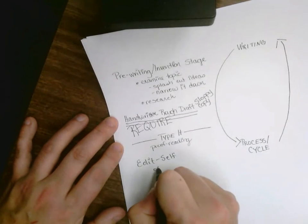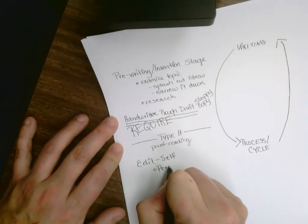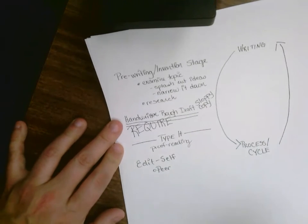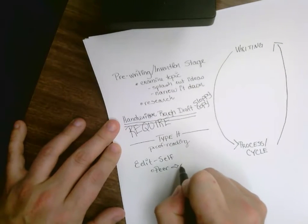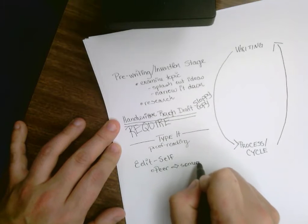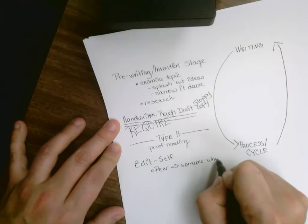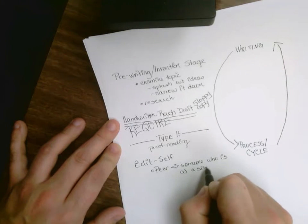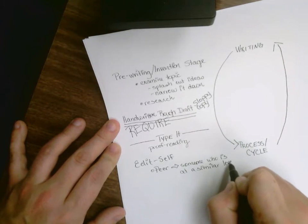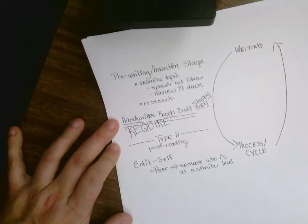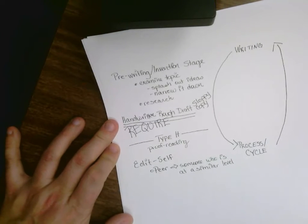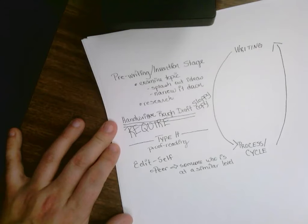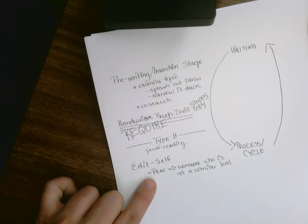You should always re-read what you have written before you give it to someone else. The next step, we can share it with a peer. A peer means someone who is at a similar level. This would be like another student in your class or perhaps another student in another class.